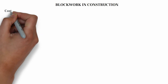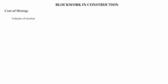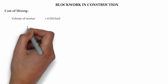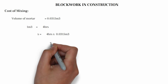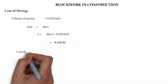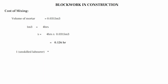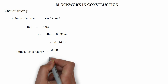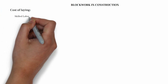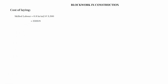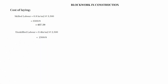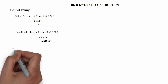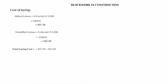Cost of mixing: volume of mortar equals 0.0315 m³. Since 1 m³ requires 4 hours, hours required to mix equals 4 multiplied by 0.0315, giving 0.126 hours. Using one unskilled laborer for mixing: 2,500 divided by 8 equals 312.50 Naira. Cost of laying: skilled labor takes 0.8 hour per meter square at 3,500 per day — 3,500 divided by 8 equals 437.50 Naira. Unskilled labor is 0.4 hour per meter square at 2,500 per day — 2,500 divided by 8 equals 312.50 Naira. Total cost of laying: 437.50 plus 312.50 equals 750 Naira.